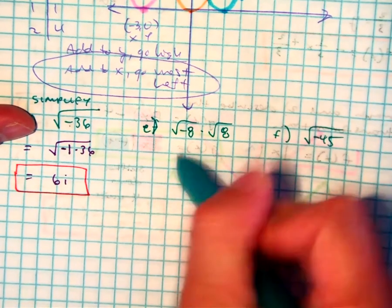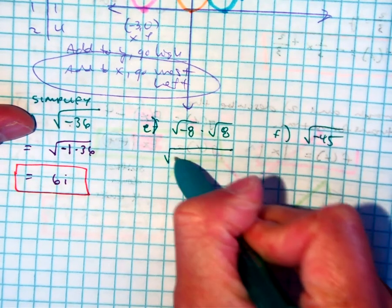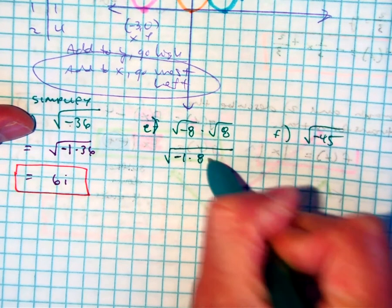Over here, you can multiply these inside the same radical now. So I have negative 1 times 8 times 8.